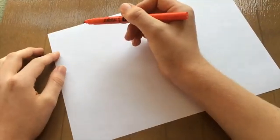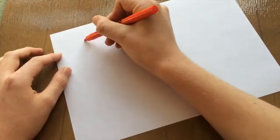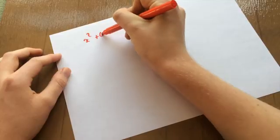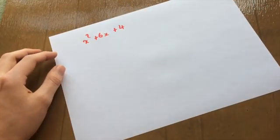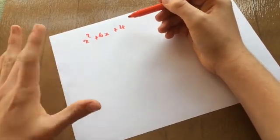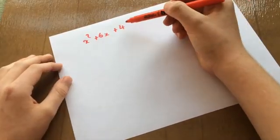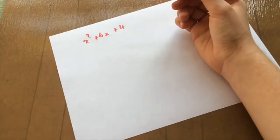The next way to do it is by completing the square. So this is when you have, I don't know, x squared plus 6x plus 4, or something like that. And as you can see, everything that times together to make 4 does not add together to make 6. So 2 plus 2 is 4, and 4 plus 1 is 5. So another way to do this would be completing the square.